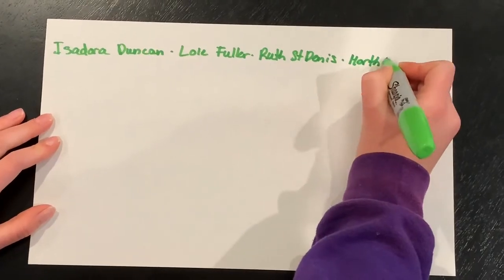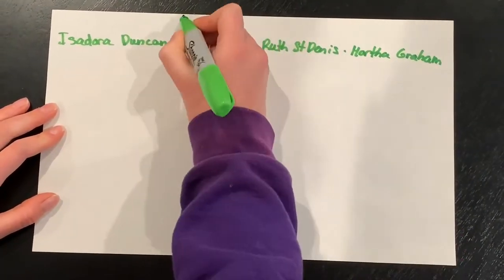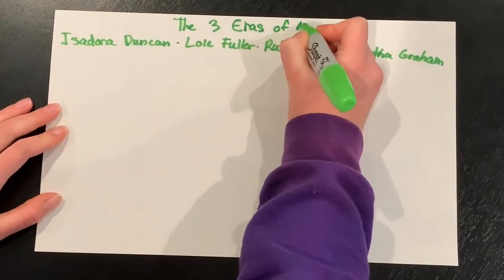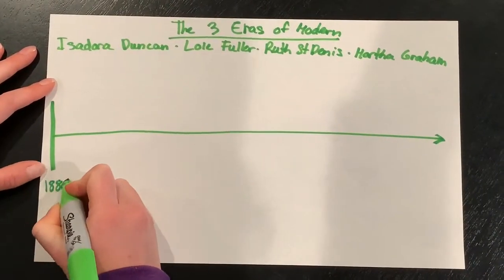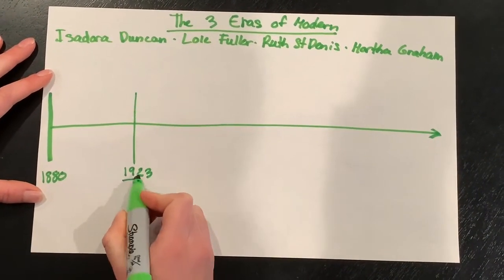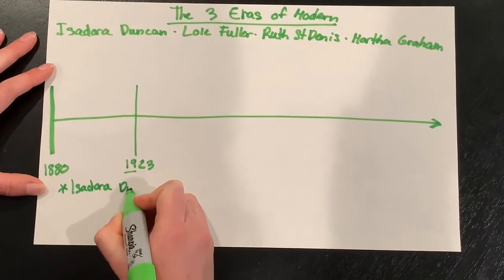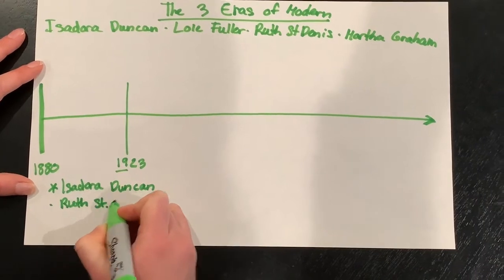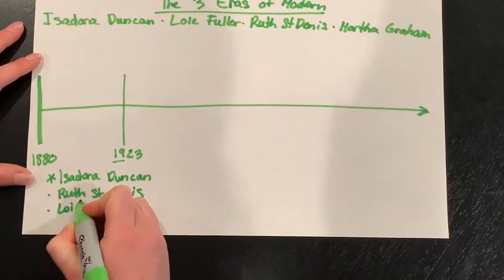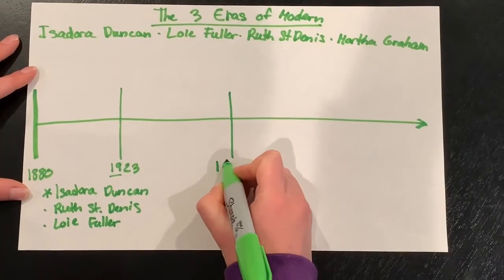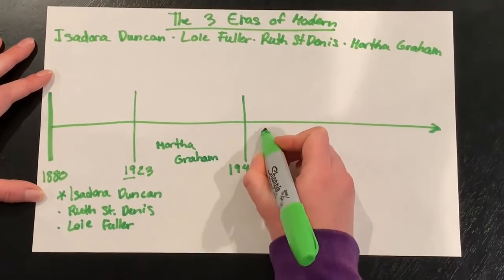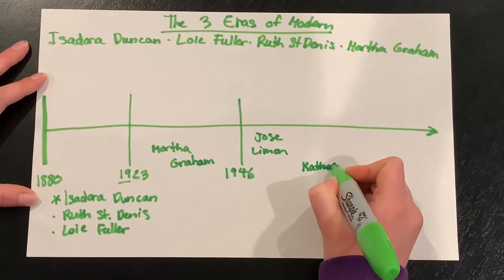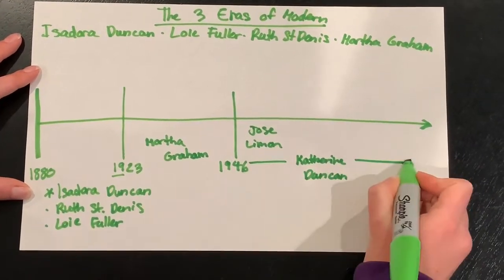People such as Isadora Duncan, Loie Fuller, Ruth St. Denis, and Martha Graham ignited this form of dance. There are said to be three eras of modern dance. The first era was from 1880 to 1923, with pioneers Isadora Duncan, Ruth St. Denis, and Loie Fuller. The second era was from 1923 to 1946, led by German dancer and choreographer Martha Graham. The late or third modern era began in 1946, led by José Limón and Katherine Dunham. That third era still continues throughout today.